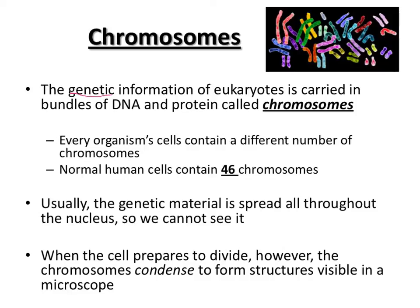The genetic information in a eukaryotic cell is found in its nucleus as bundles of DNA and protein called chromosomes. Every organism's cells contain a different number of chromosomes — a fruit fly has four, for example. Human cells contain 46 chromosomes, and you'll want to remember that number. These actually come in pairs, so humans have 23 pairs of chromosomes in their cells.